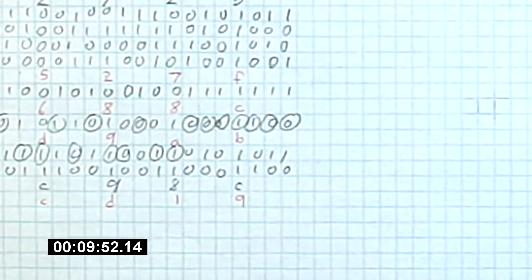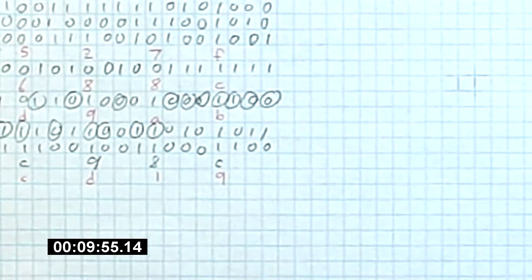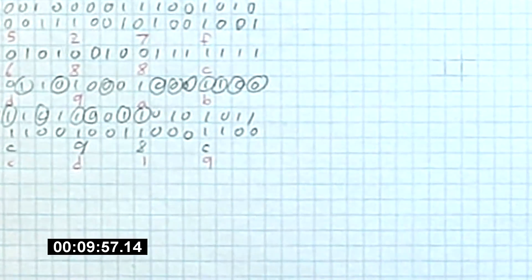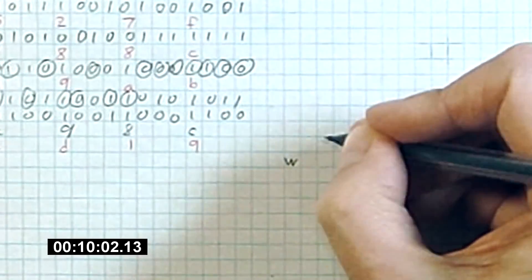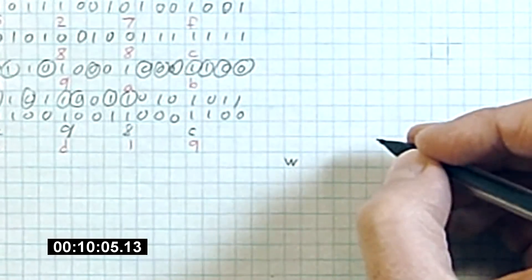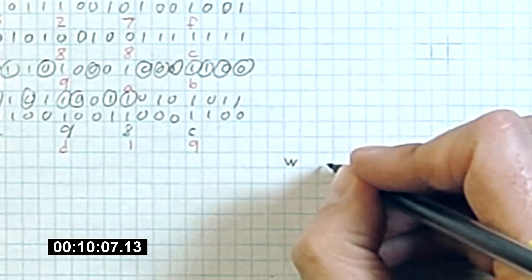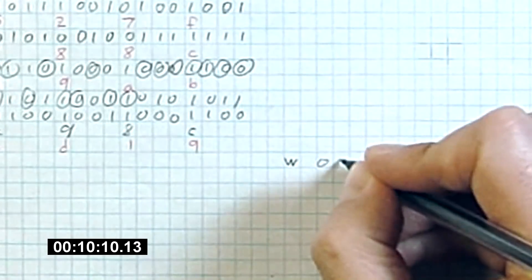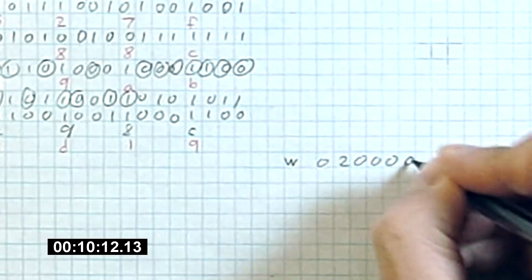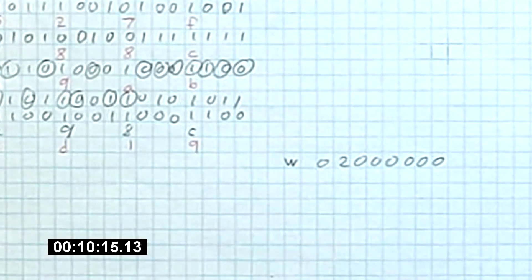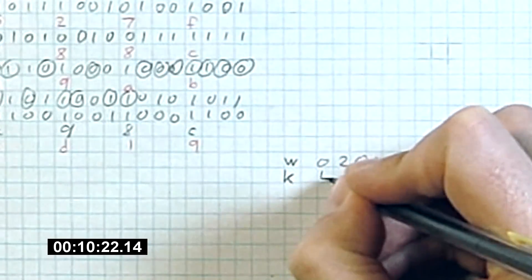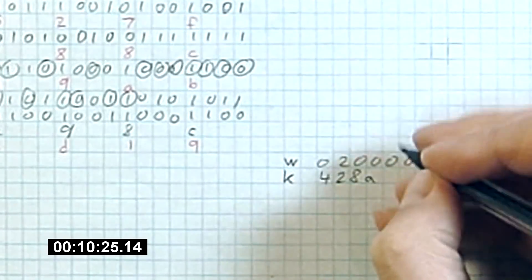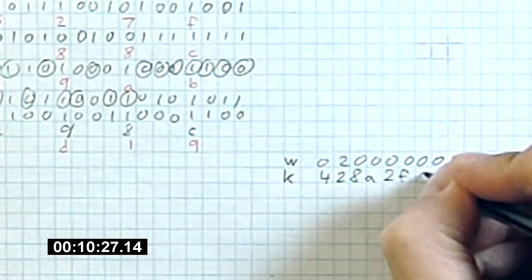Now, the next step is to combine all this data to make our first sum. So we go over here. We're going to start with W, which is our input. So this is actually the first place that our input data is actually going into the hash. 0, 2, 0, 0, 0, 0, 0, 0. This actually indicates our data block is version 2. Now we take another constant provided by the NSA. 4, 2, 8, A, 2, F, 9, 8.